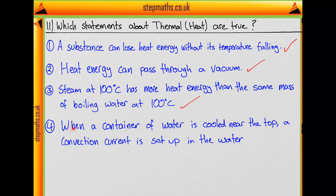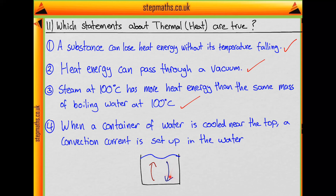Finally, statement 4: when a container of water is cooled near the top, a convection current is set up in the water. Looking at a diagram of water in a container, when we cool the water at the top it becomes more dense, so it sinks and pushes the less dense warmer water up to the top. That warmer water then cools down, becomes more dense, and sinks — and so on. So we have a convection current, and statement 4 is also true.